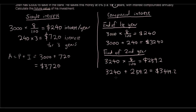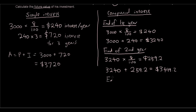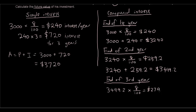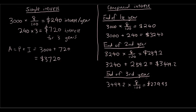And then we have one more year — the end of the third year. At the end of the second year our principal was $3,499.20, so find 8% of that and then add it on. So $3,499.20 times 8 over 100 is $279.93. And so our final amount, the future value, is $3,499.20 plus $279.93.